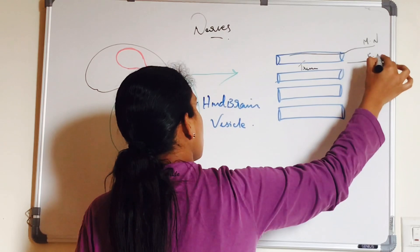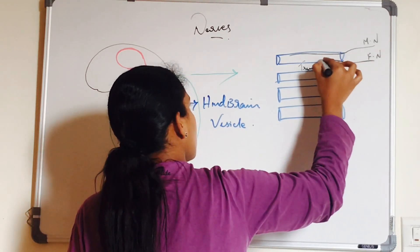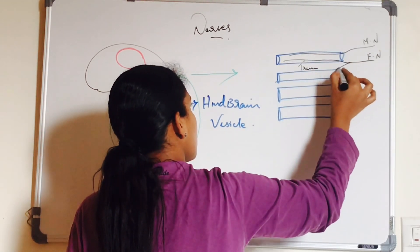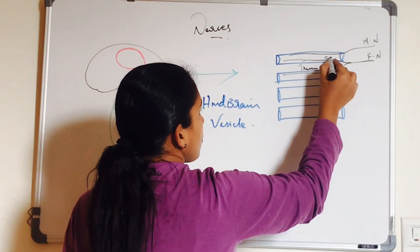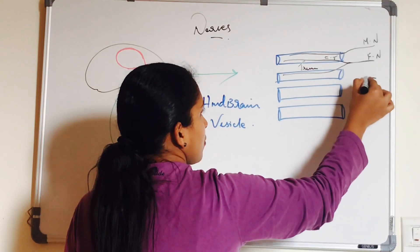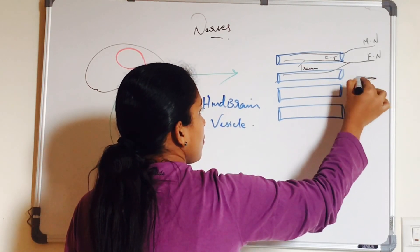Second nerve is the facial nerve. Now you can see at the trema it divides into two branches. Your pre-trematic nerve is called chorda tympani which goes to the first arch. And the post-trematic, that is proper facial nerve, comes to the second arch.